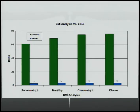This BMI graph shows that when an adult is underweight, they require less medicine than one that is at a healthy weight and so on. Weight couldn't necessarily be compared directly because at a certain weight, there can be patients who are healthy and others who are obese.